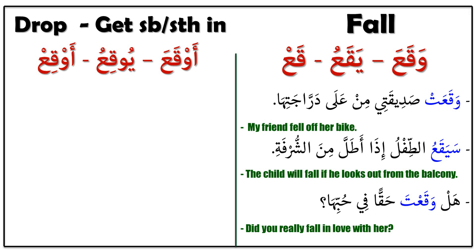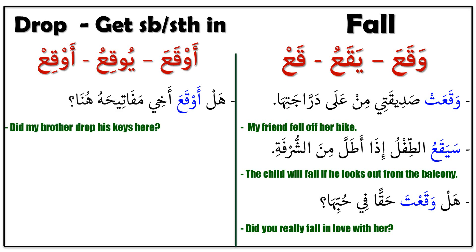أَوْقَعَ، يُوقِعُ، أَوْقَعَ — it means 'to drop something' or 'to get somebody or something into something serious.' As you can see, there is one extra letter here. Please look at the first sentence: هَلْ أَوْقَعَ أَخِي مَفَاتِيحَهُ هُنَا — it means 'Did my brother drop his keys here?' هَلْ أَوْقَعَ: did he drop, أَخِي: my brother, مَفَاتِيحَهُ: his keys, هُنَا: here.